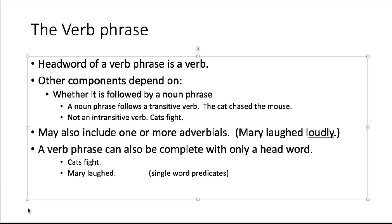Okay, so we're back and we're going to move from the verb to the verb phrase. And as you would expect, the head word of verb phrase is a verb, just like the head word of a noun phrase is a noun. So the other components of a verb phrase though depend on what is the subclass of the verb. For example, whether it's followed by a noun phrase. So a noun phrase follows a transitive verb like the cat chased the mouse, but not an intransitive verb like cats fight. In many if not most sentences, the verb phrase includes one or more adverbials. Mary laughed loudly. We are going to be studying verb phrases in detail because the variations of the verb phrases and the sentence predicate is actually what differentiates sentence patterns. And having a variety of sentence patterns in your toolbox is what we are striving for here.